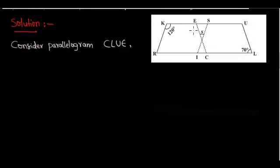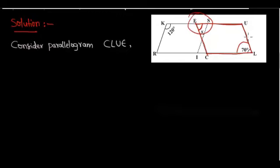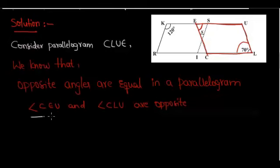Have a look at the figure. We are considering parallelogram CLUE. In this parallelogram, angle CLU is opposite to angle CEU. In a parallelogram, opposite angles are equal. So by equating these two angles, we get that angle CEU and angle CLU are opposite angles and therefore they must be equal.